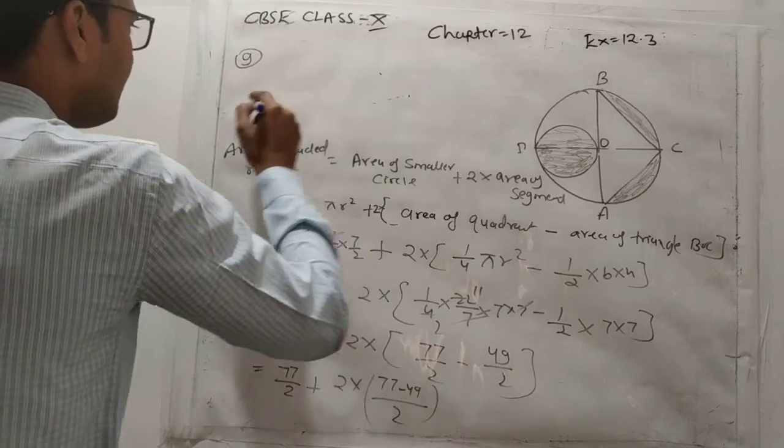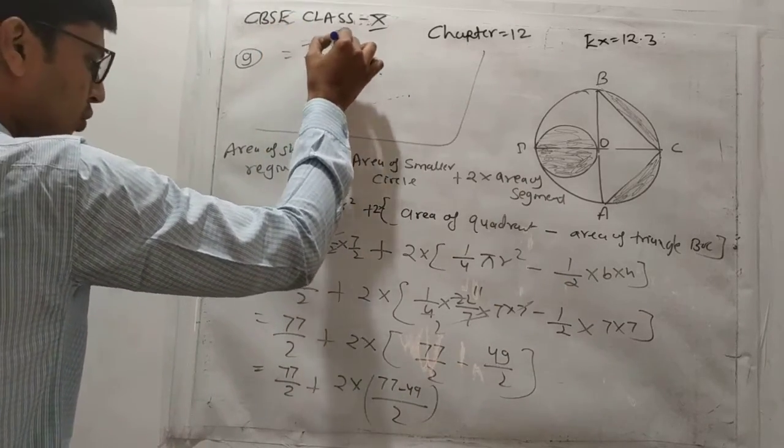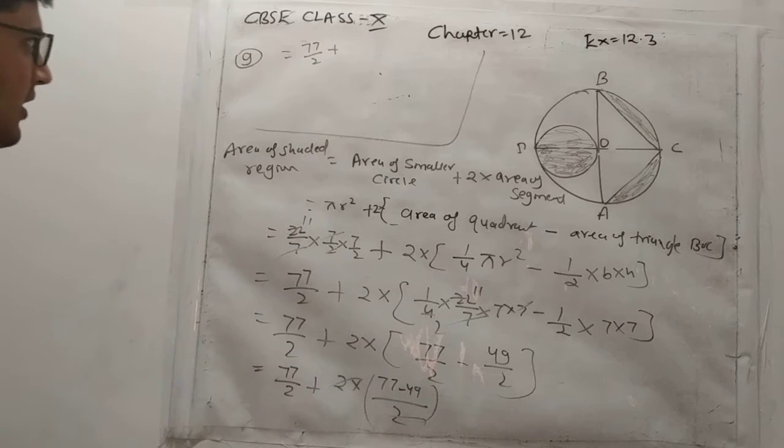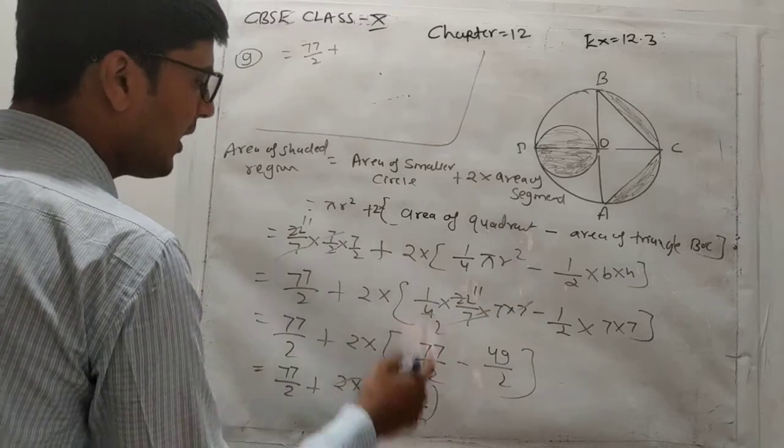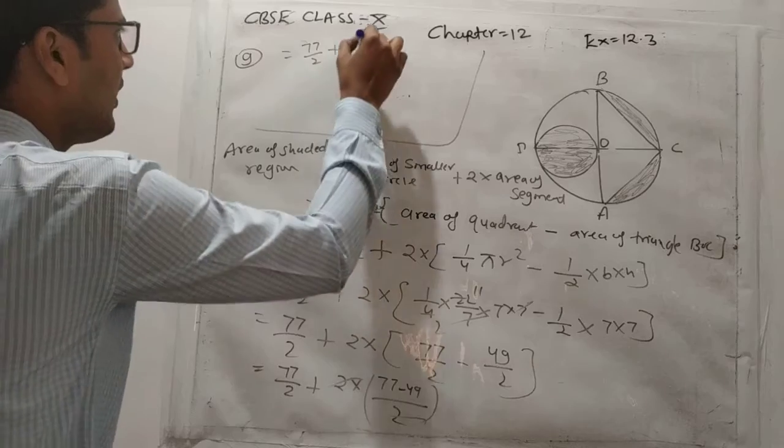So next step, equal 77 upon 2 plus, this 2 se 2 cancel out. And 77 minus 49, so 7 minus 9 we get 8, and here 6 is remaining, 6 minus 4 we get 2, so it's 28.